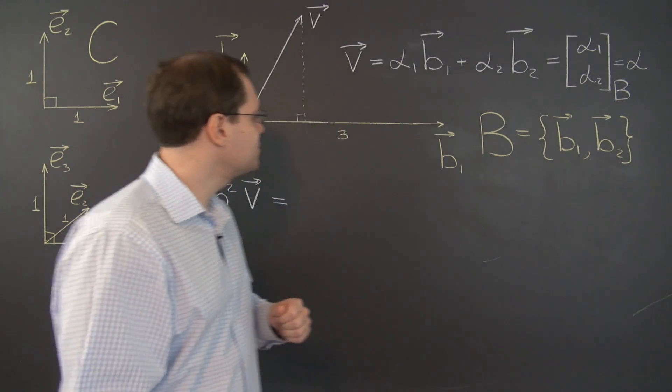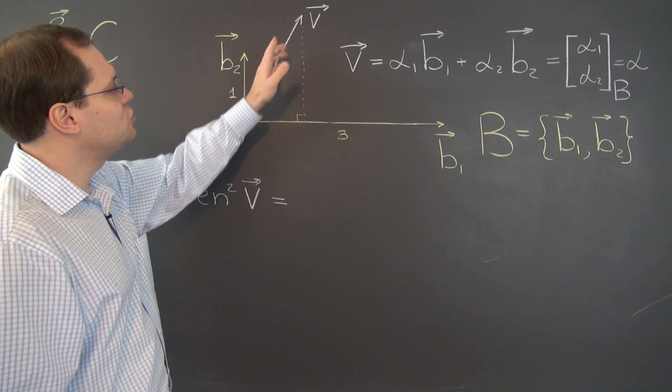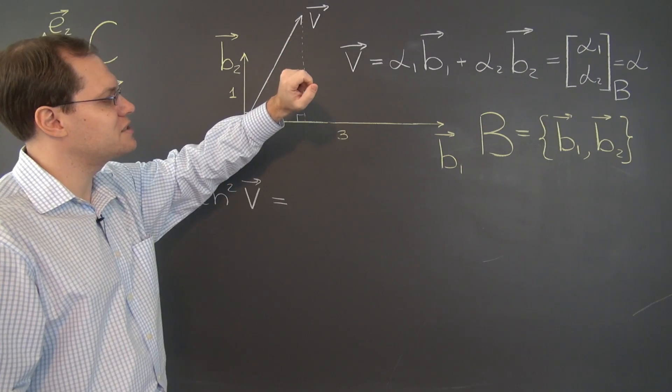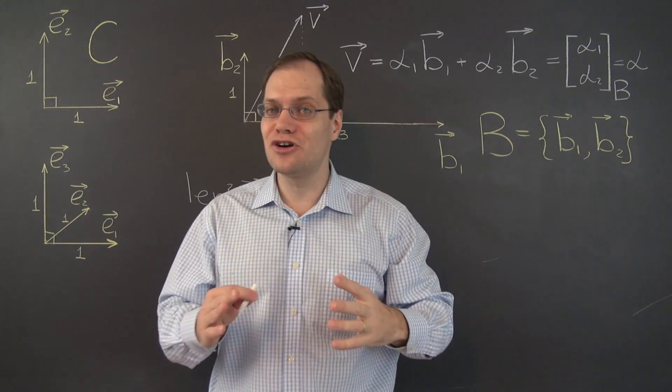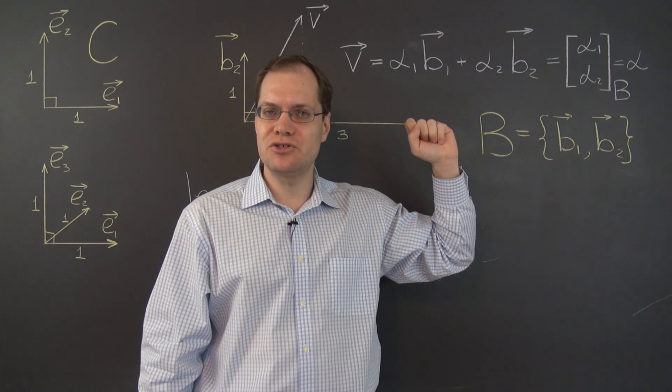Alright, so now let's get to the task at hand and determine the expression for the length of vector v in terms of its components alpha 1 and alpha 2.